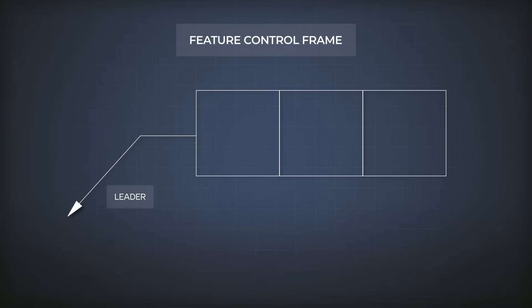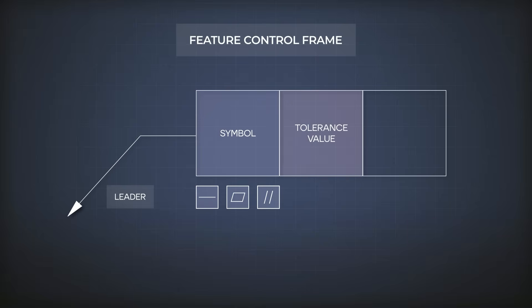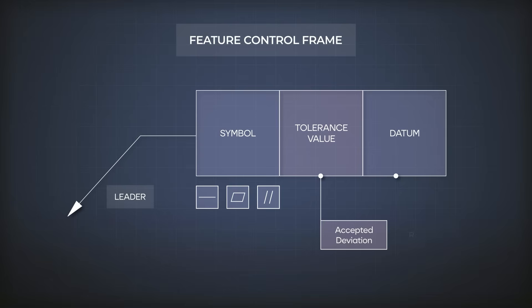In the first field, we put the symbol of the specification, like straightness, flatness, or parallelism. In the second field, we put the value of tolerance — this is the accepted deviation that we want to allow or tolerate. In the third field, which is not always required, we put the datum, which is the reference to which the specification is tolerated.